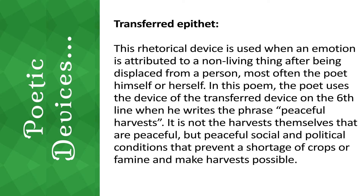The next device is transferred epithet, used when an emotion is attributed to a non-living thing after being displaced from a person — most often the poet himself or herself. In this poem, the poet uses transferred epithet on the sixth line with the phrase 'peaceful harvests.' It is not the harvests themselves that are peaceful, but peaceful social and political conditions that prevent a shortage of crops or famine and make harvests possible.